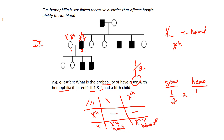Out of those two son boxes, one half of those have hemophilia. This is a very typical question — they love probability with sex-linked. So 1 times 1 is 1, over 2 times 2 is 4: 1/4, or decimal 0.25, or 25%. On your exam, they will tell you which form to put it in.